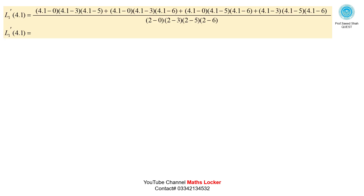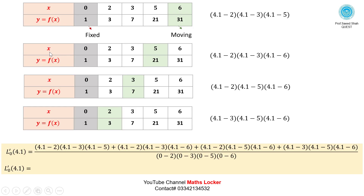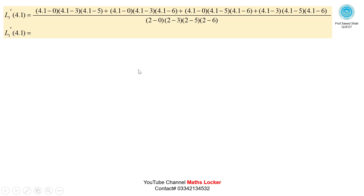Similarly, you can calculate the value of L1' using the same procedure. Fix the second point and mark the remaining points. Take 4.1 minus 0, 4.1 minus 3, and 4.1 minus 5. Move through the last point, second last, third last, counting toward the fixed value to obtain L1'(4.1).